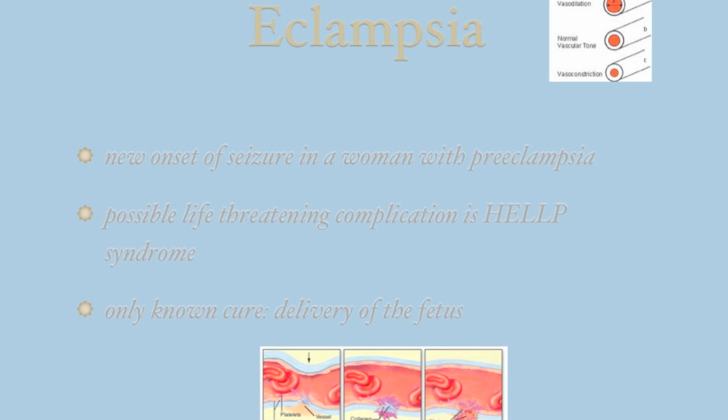One of the serious complications of PIH, preeclampsia, or eclampsia is what we call HELLP syndrome — capital H-E-L-L-P. This is an acronym for hemolysis of the red cells, elevated liver enzymes, and low platelets.